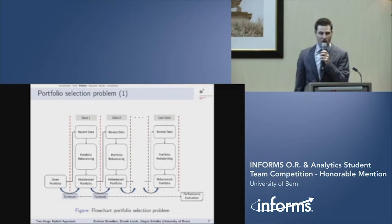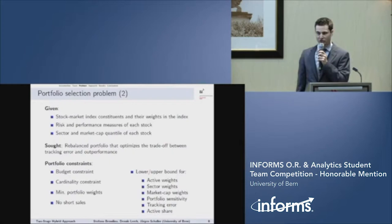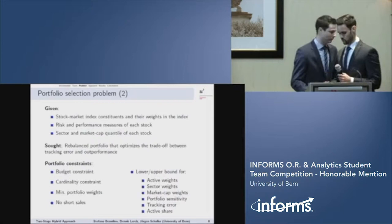Since turnover costs arise from the rebalancing, we must take them into account in the performance evaluation. At each rebalancing date, the following information is given. We know the stock market index constituents and also their weight in the index. Then, we know different risk and performance measures of each stock, and we know the sector and market cap quantity for each stock. Our objective at each rebalancing date is to adjust the portfolio such that the trade-off between the net excess return and the tracking error is optimized. But as you can see here, there are numerous constraints that must be satisfied by our rebalanced portfolio.